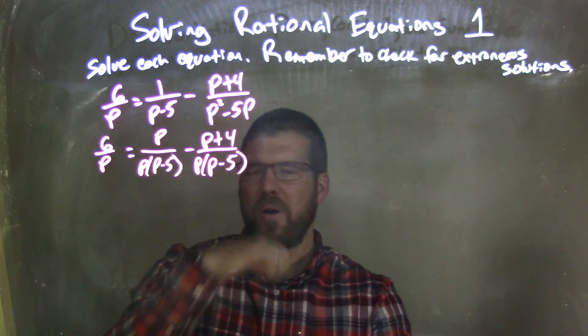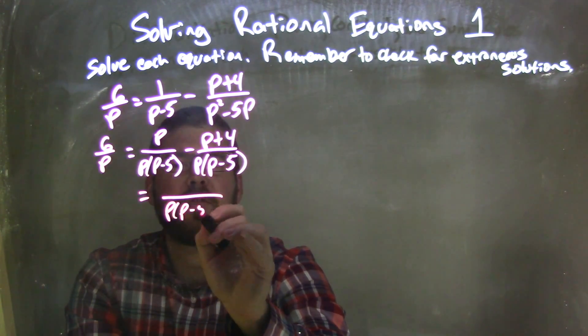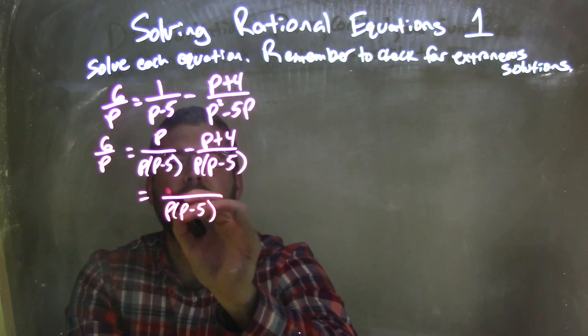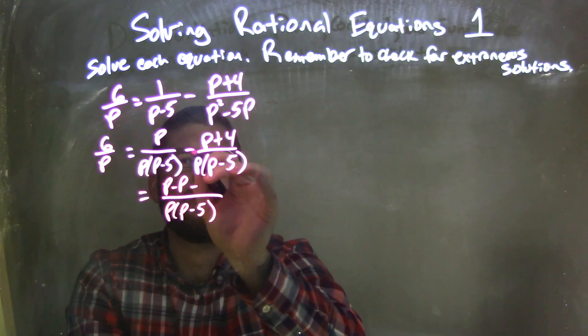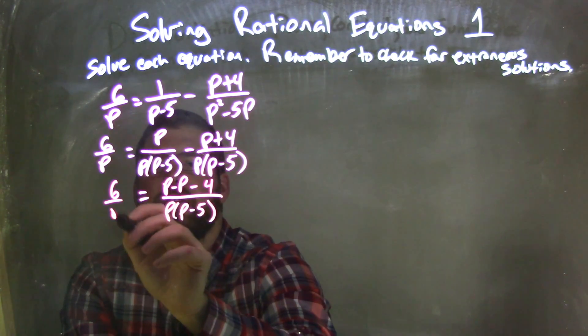So now what I'm going to do is, well, I can combine the two. The denominator is still p times p minus 5, so the numerator is p minus p minus, keep the subtraction and distributing, minus 4, and then we have 6 over p on the left.